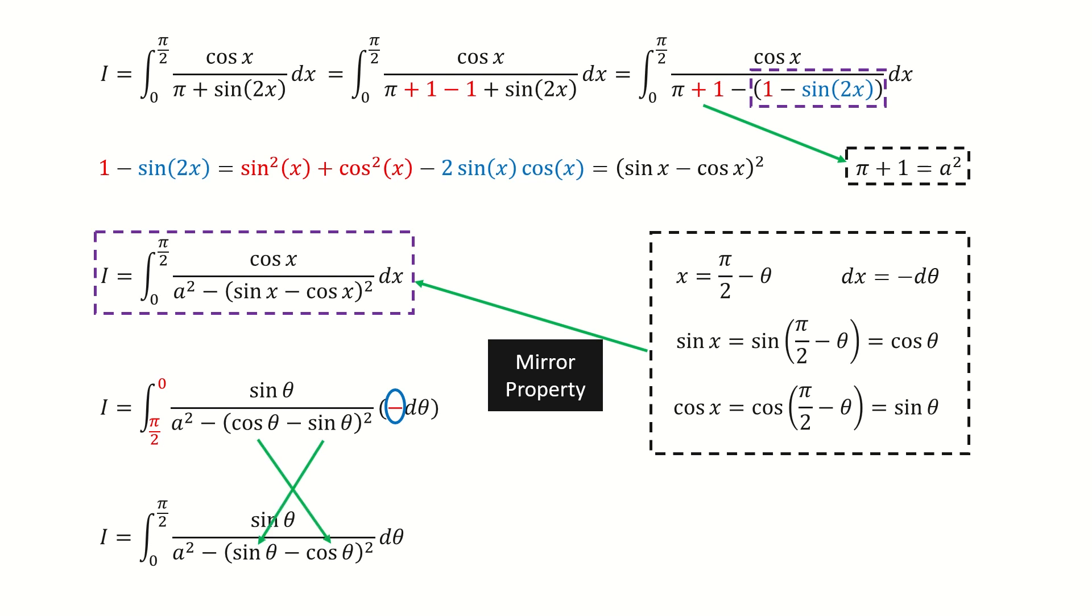So we got here. Here we switch the cosine and sine terms because they are inside the complete square.